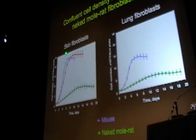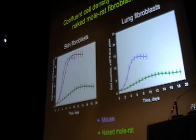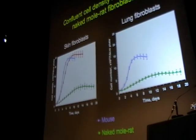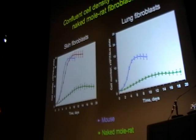This is true for skin fibroblasts and for lung fibroblasts — lung fibroblasts are a bit bigger, so it takes fewer cells to occupy the same plate. We also obtained a spontaneous mutation in one of the naked mole-rat cell lines, which starts to grow rapidly and reaches the same cell density as mouse cell lines. This suggests that some mechanism involved in early contact inhibition got mutated in that cell line.